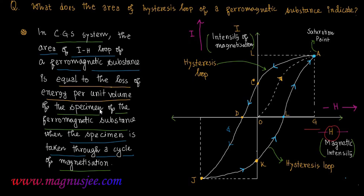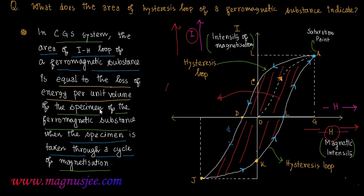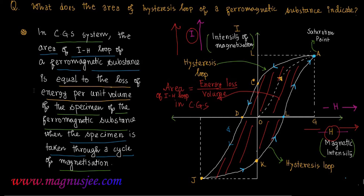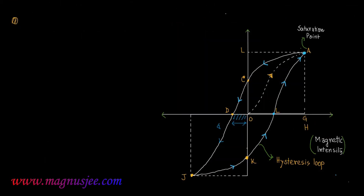So if H is plotted along the horizontal axis and I (intensity of magnetization) is plotted along the vertical axis, then the area enclosed by the hysteresis loop is equivalent to energy loss divided by volume of the specimen. Area of I-H loop in CGS system is equal to the energy loss per unit volume of the specimen.